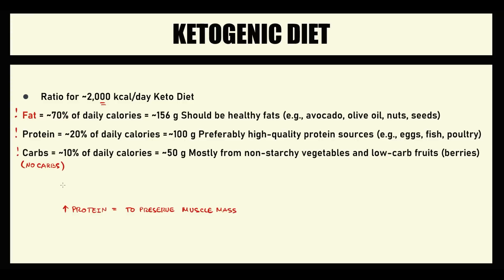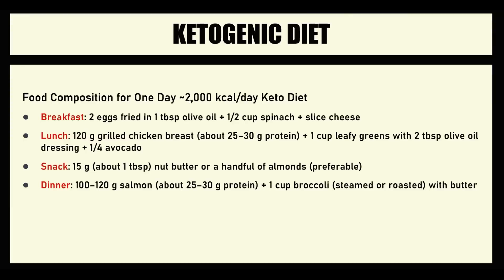Carbohydrates should be limited, mostly to vegetables and fruits with limited starch, because starch is essentially glucose. Fructose must also be avoided since it can be converted to glucose — honey, for example, does not work on this diet. The standard food composition for a person on a ketogenic diet reflects these strict requirements, making it not an easy diet to follow.